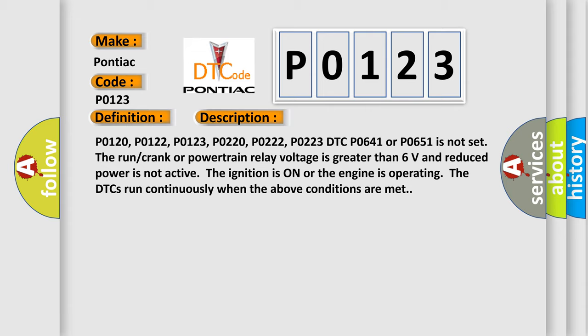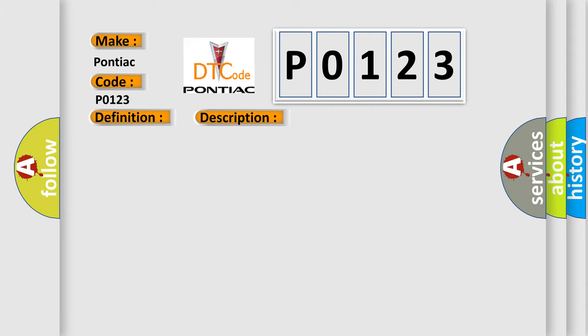P0120, P0122, P0123, P0220, P0222, P0223, DTC P0641 or P0651 is not set. If the crankshaft or powertrain relay voltage is greater than 6 volts and reduced power is not active, the ignition is on or the engine is operating, the DTCs run continuously when the above conditions are met. This diagnostic error occurs most often in these cases.